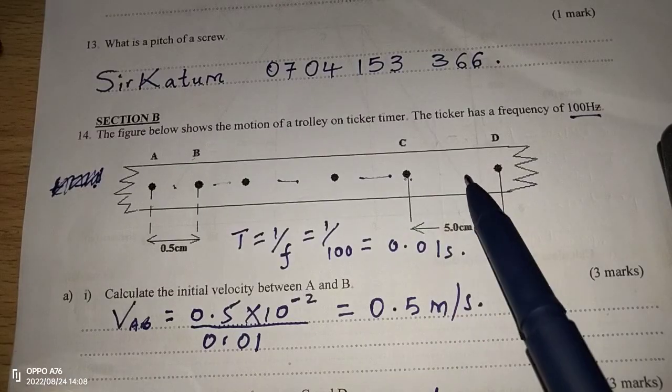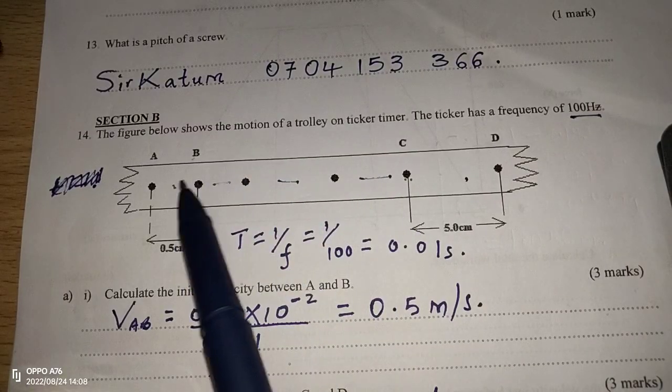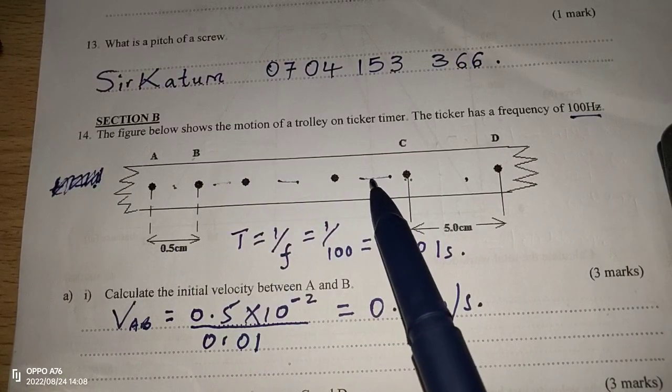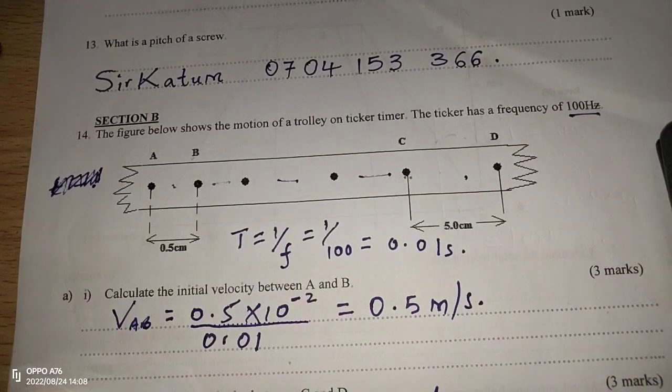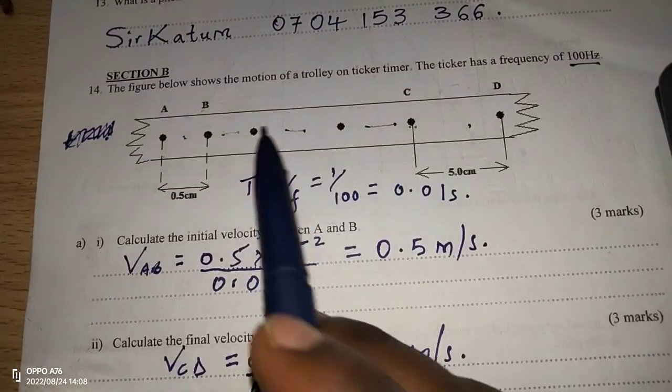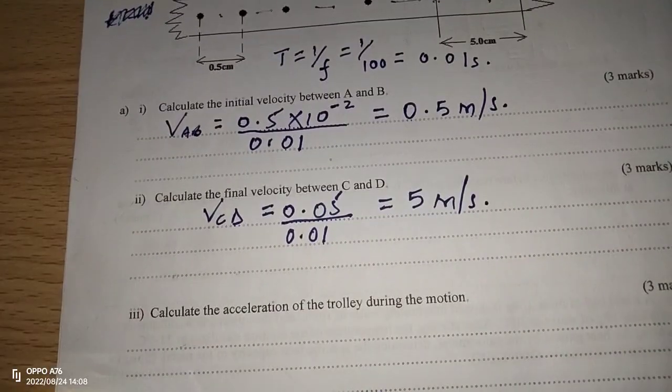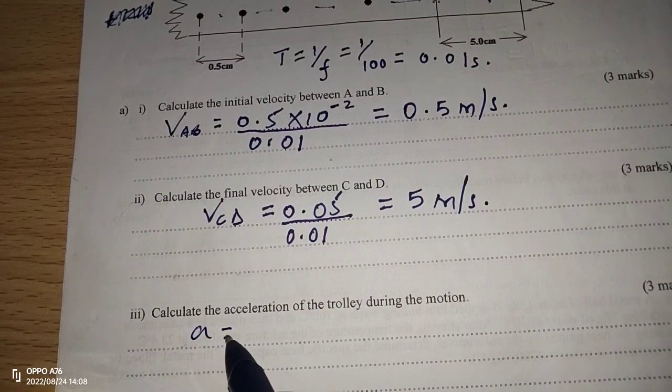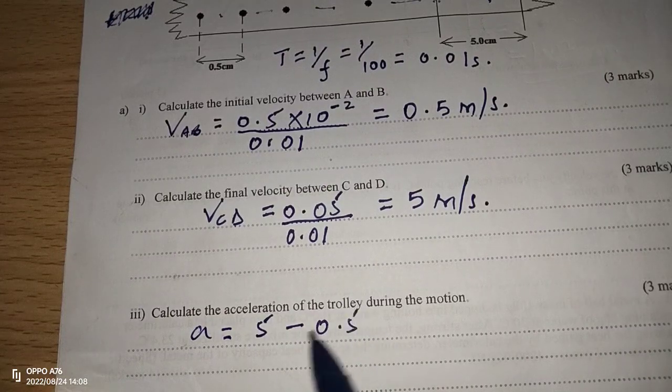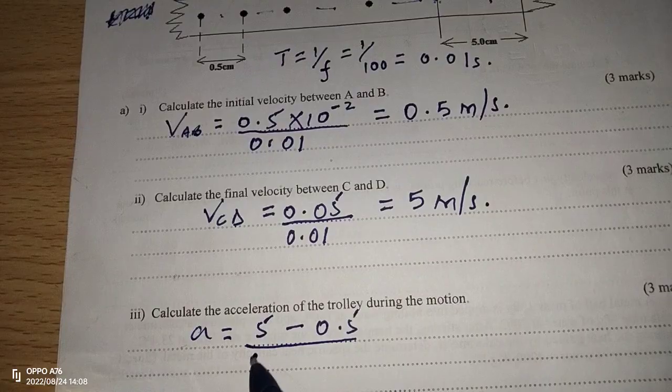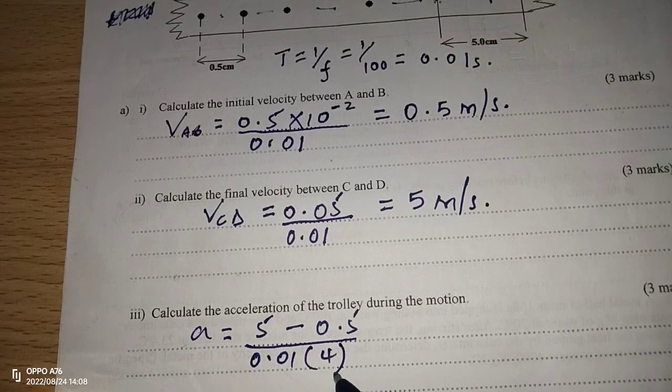Therefore, we have 1 space, then plus these complete spaces now, which is 1, 2, 3, plus the 1 from these limits. So, we'll be having 1, 2, 3, then the fourth one. So, we have 4 spaces, which means the velocity is changing from 0.5 to 5, within 0.01 seconds in 4 intervals.